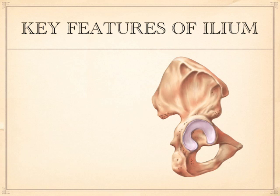Did everybody find the four iliac spines? You know what it means by a spine? When I think of a spine, I think of something on a cactus. These aren't quite that sharp, but the iliac spines are very easy. There's four of them.